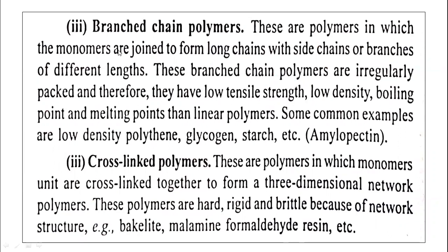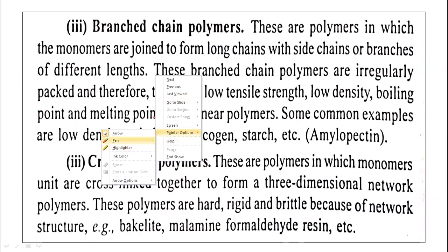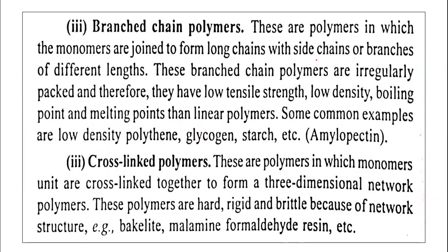Branched chain polymers are those in which the monomers are joined to form long chains with side chains. These branched chain polymers are irregularly packed, and therefore have low tensile strength, low density, and lower boiling and melting points. Common examples include low-density polythene, glycogen, starch, and amylopectin.